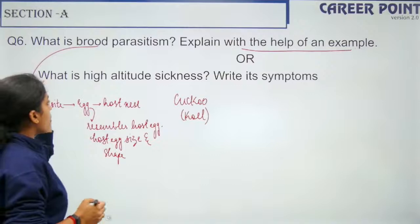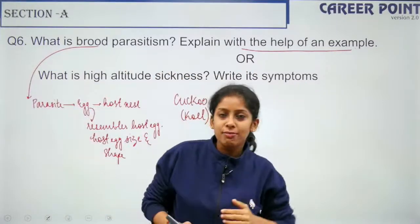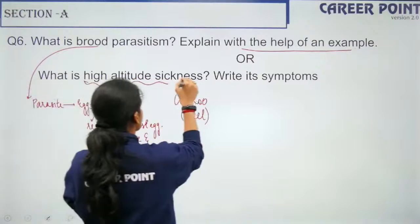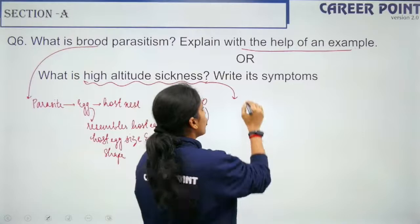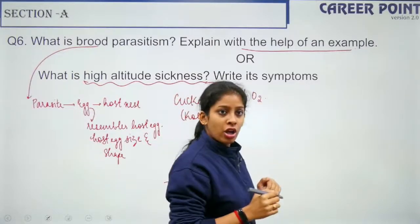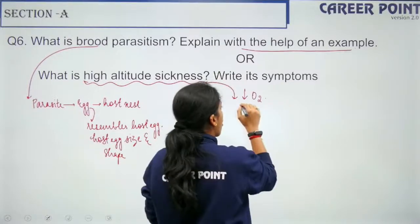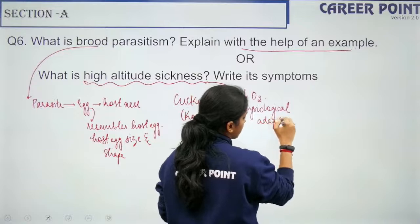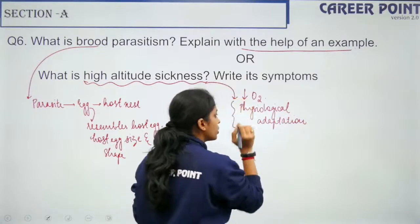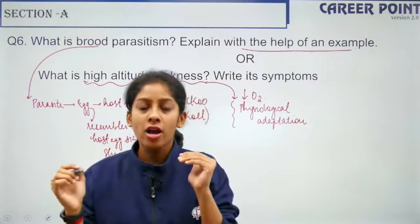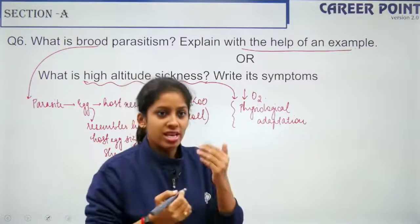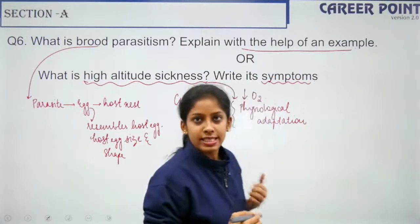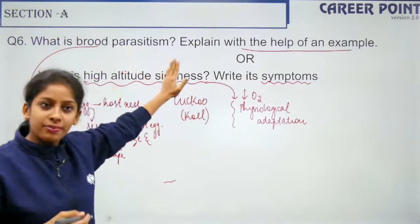The alternative for Question 6 is: 'What is high altitude sickness? Write its symptoms.' As you move to high altitudes, oxygen content decreases and you run short of breath. It is a type of physiological adaptation — the body overcomes it by increasing RBC production and scavenging available oxygen. Symptoms include nausea, headache, and shortness of breath. Section A's six questions are now complete.